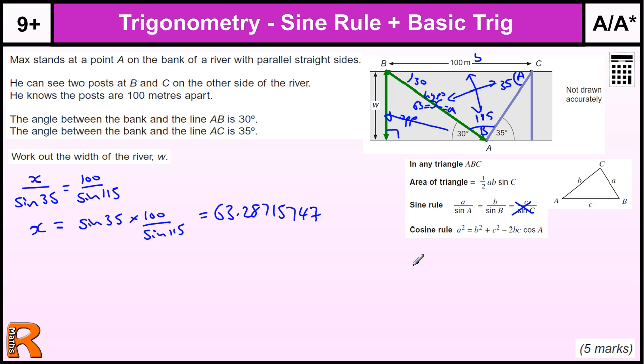So, using the formulas that we don't get given. The sine opposite hypotenuse, cos adjacent hypotenuse, tan opposite adjacent. We're going to use the opposite and the hypotenuse, which is the sine rule.